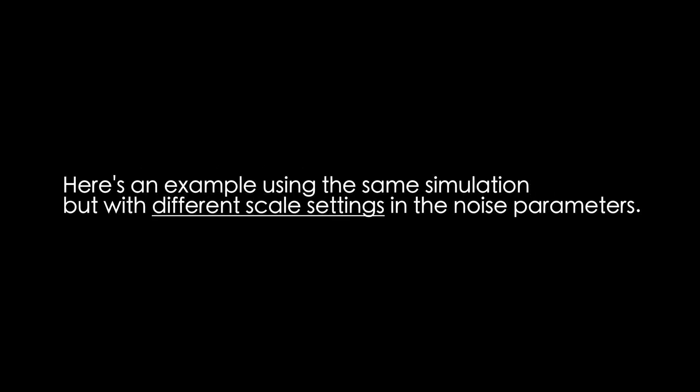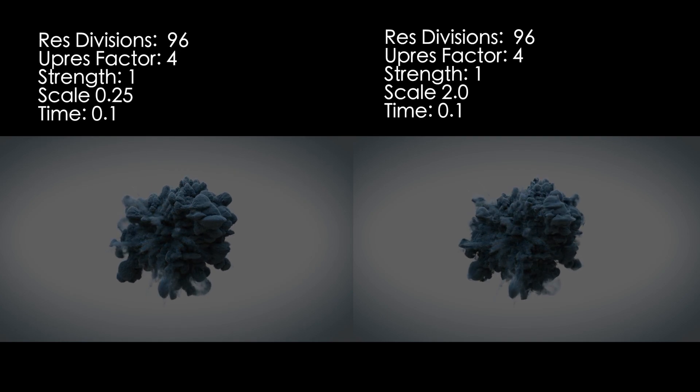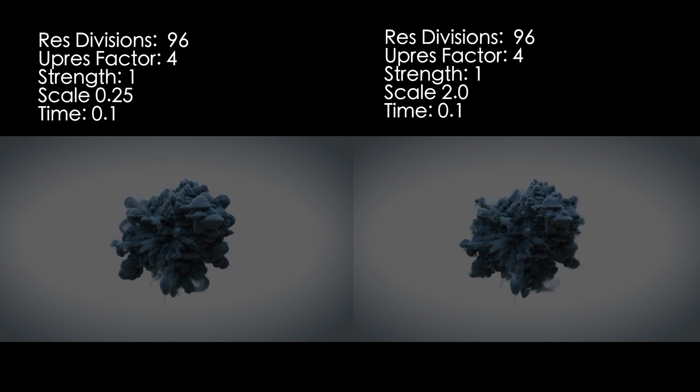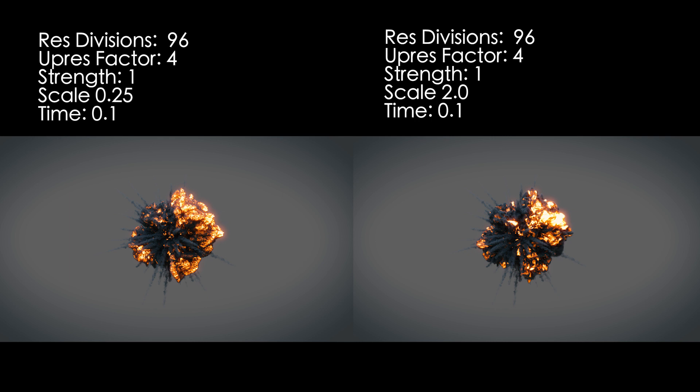To display the difference, I rendered out the same simulation with different noise scale settings. As you can see, the simulation on the left with a scale factor of 0.25 has much more detailed bubbles in the fire and smoke itself, while the one on the right has noise that creates a bigger distinction in the way the simulation moves overall.